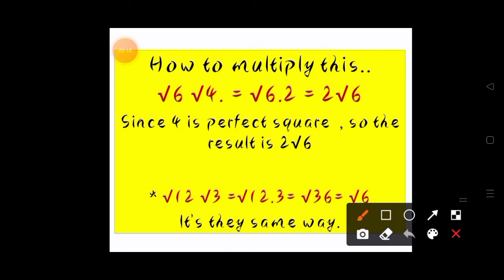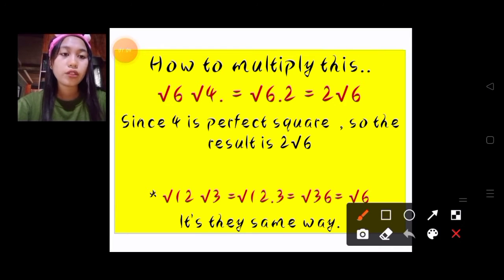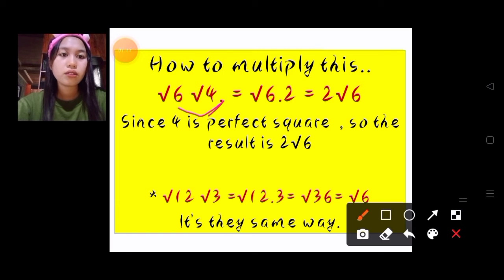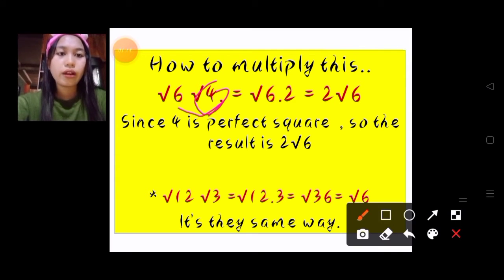How to multiply square root of 6 and square root of 4. Square root of 6 times square root of 4 equals square root of 6 times 4, which gives us square root of 24. Since 4 is a perfect square and the square root of 4 is 2, the final answer is 2 square root of 6.